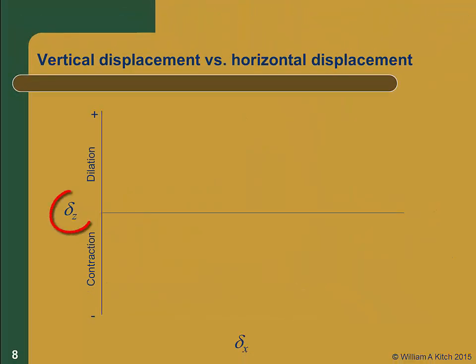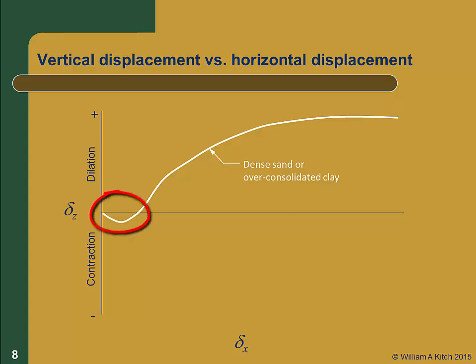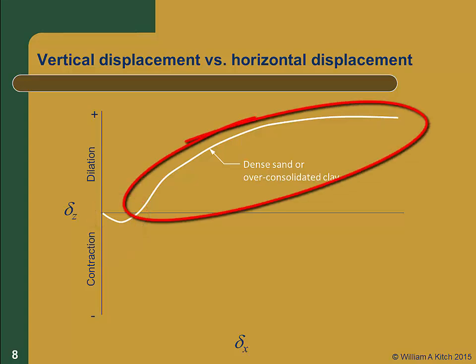During the shear test, we record the vertical displacement at the top of the specimen as a function of the horizontal displacement. Here we see a typical plot of the vertical displacement versus horizontal displacement for a dense sand or over-consolidated clay. There is a small amount of downward movement of the specimen at the start of shearing, but it is followed by a larger upward movement indicating that the specimen is dilating during shear.